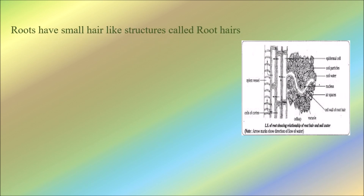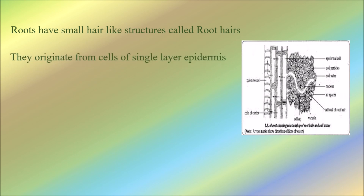Roots have small hair-like structures called root hairs. These small hair-like structures are observed on the roots. They originate from cells of the single-layer epidermis.